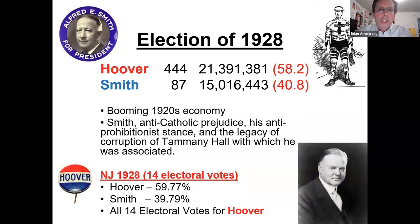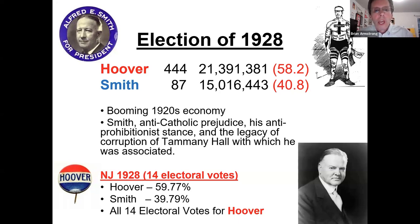The 1928 election with Hoover saw a big win — one of those where someone wins big then things go bad quickly. Within a short time after his inauguration, the crash of 1929 hit and he dealt with the Great Depression. The big fight was between Hoover and Smith — the first Catholic candidate to run, with a lot of anti-Catholic prejudice, anti-prohibition stance, and the corruption legacy of Tammany Hall thrown against him. Hoover wins big in New Jersey with 59%. Hoover may have wanted to lose, because what came next was not good.